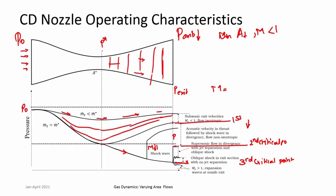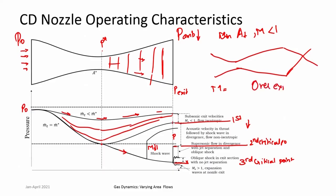Just before reaching the third critical point of completely expanded flow, if pressure ratios are slightly lower — meaning ambient pressure is still slightly higher than design — then at the exit you get oblique shocks. The flow has expanded completely inside the nozzle, but the outside pressure conditions do not allow a fully expanded flow. Since the nozzle cannot communicate this because the flow is supersonic, oblique shocks form outside. That operation is termed over-expanded operation.